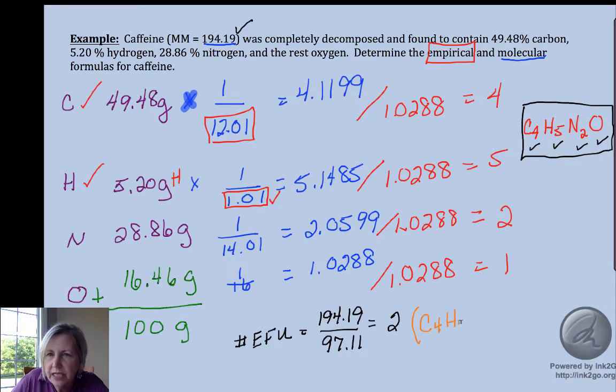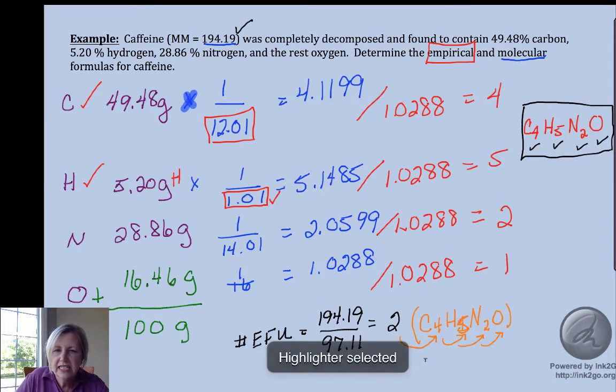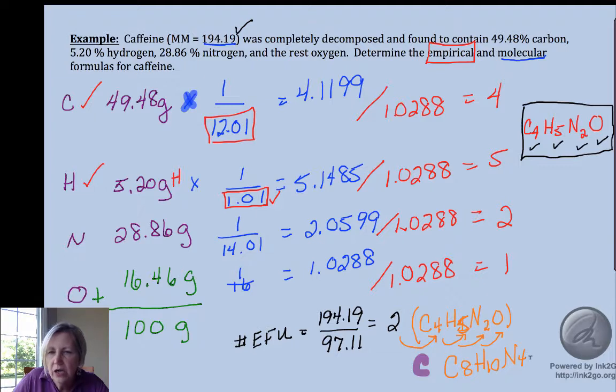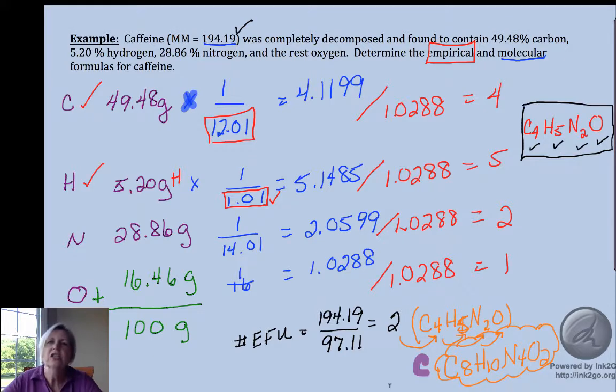So that means we're going to take this 2 and we're going to multiply it by every subscript in my empirical formula. So that tells me I have 2 of these empirical formula units. That's a 5, sorry, I miswrote that. So we're going to multiply every one of these by 2. So that gives us our final answer that they requested as C8H10N4O2. And that's what I drink way too much of in the mornings. Thanks for joining me, take care.